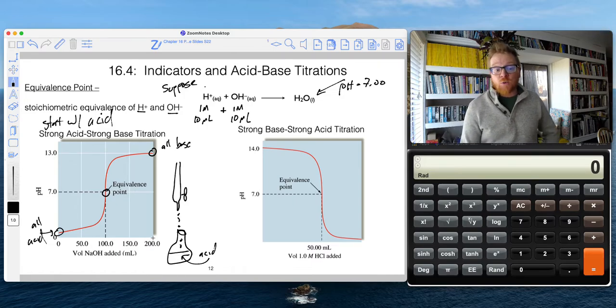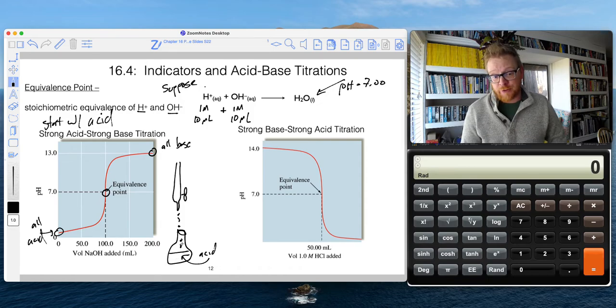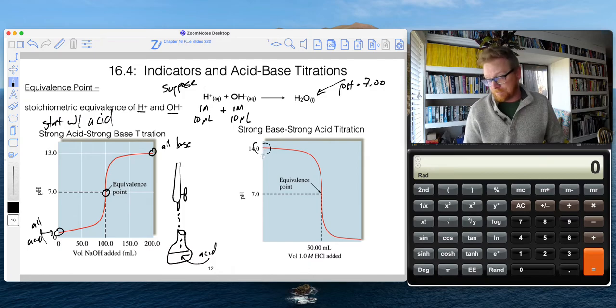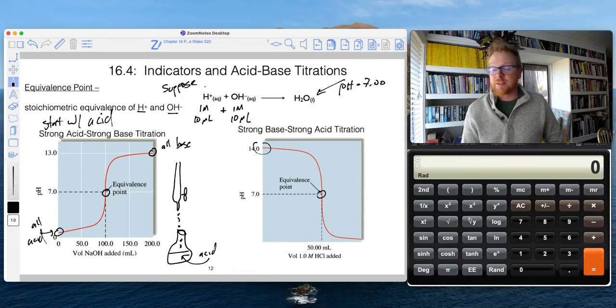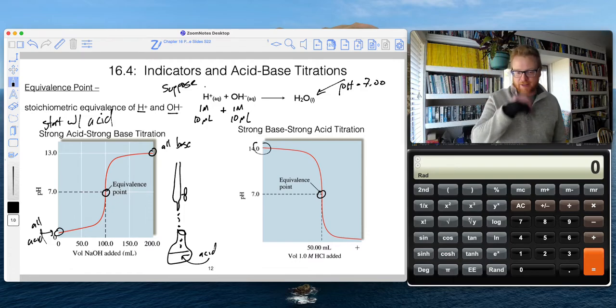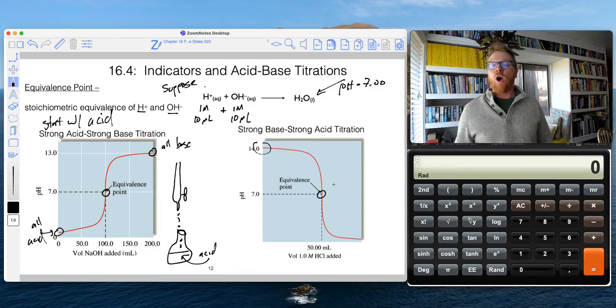On the other hand, we could flip this and we could put base in our flask and acid in our burette, and we would just see a mirror image of the same thing. We would be starting at some basic pH, right? And then we would see like this mirror image profile to the equivalence point right at pH 7.0. And then we would see that really drop down into the acidic pHs once we've titrated out all of our base.